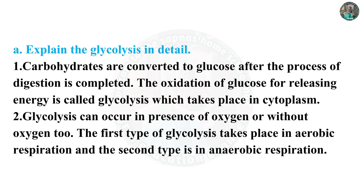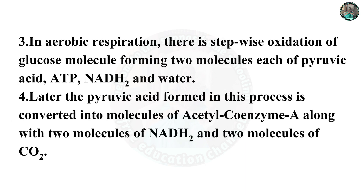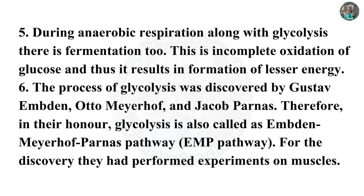Question 5: Answer in detail. A. Explain glycolysis in detail. 1. Carbohydrates are converted into glucose after the process of digestion is completed. The oxidation of glucose for releasing energy is called glycolysis, which takes place in the cytoplasm. 2. Glycolysis can occur in the presence of oxygen or without oxygen. The first type takes place in aerobic respiration and the second in anaerobic respiration. 3. In aerobic respiration there is stepwise oxidation of glucose forming two molecules each of pyruvic acid, ATP, NADH2 and water. 4. Later the pyruvic acid is converted into acetyl coenzyme A along with two molecules of NADH2 and two molecules of carbon dioxide. 5. During anaerobic respiration, along with glycolysis there is fermentation, which is incomplete oxidation of glucose resulting in lesser energy.